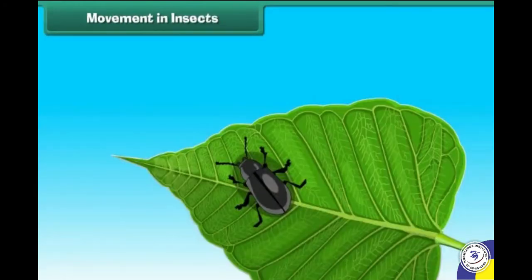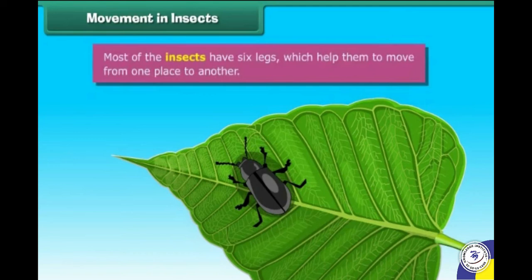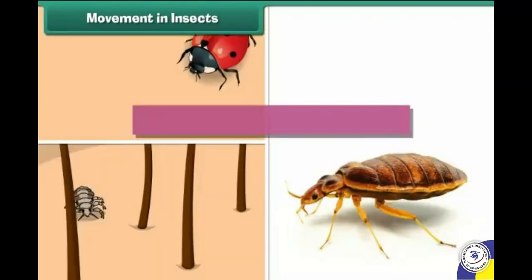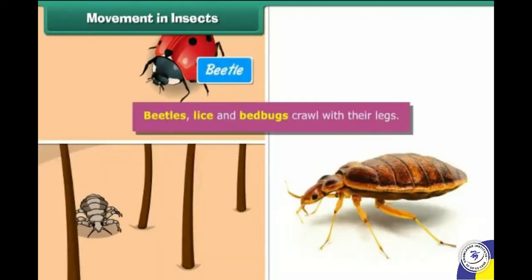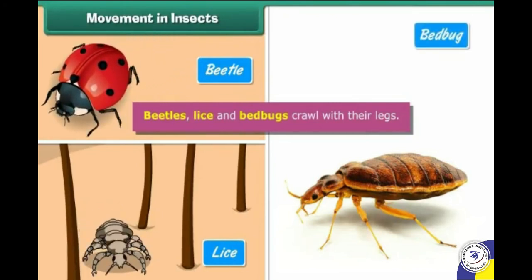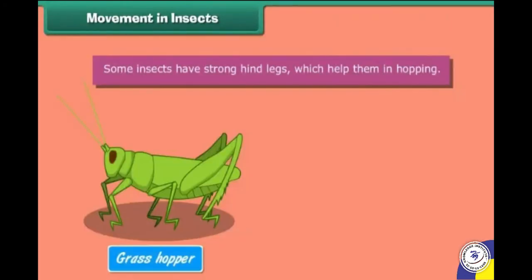Movement in insects: most insects have six legs which help them move from one place to another. Ants and cockroaches walk with their legs. Beetles, lice, and bed bugs crawl with their legs. Some insects have strong hind legs which help them in hopping.